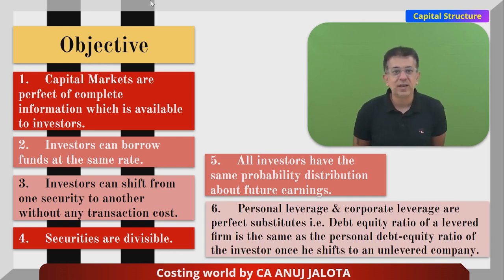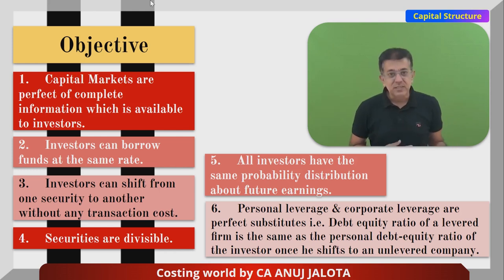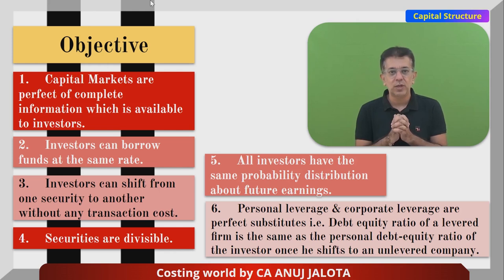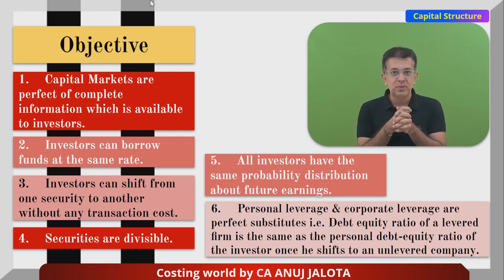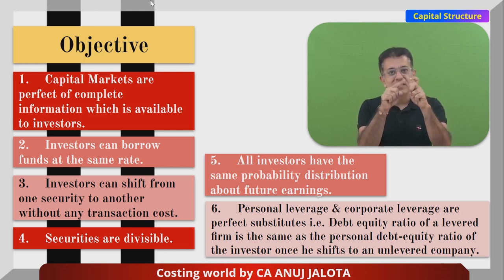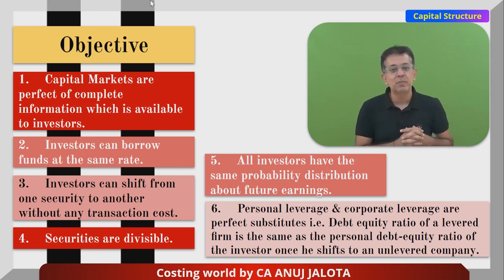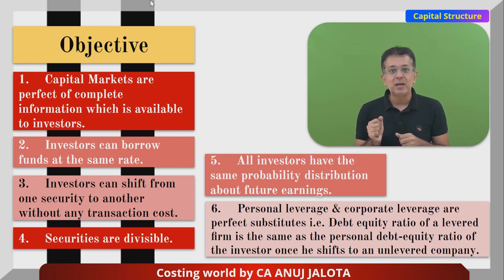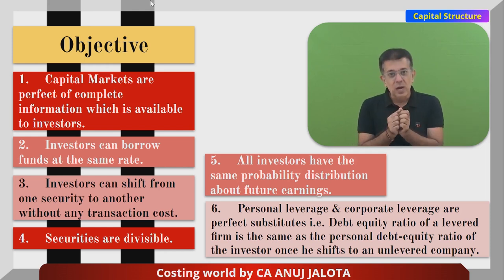Assumption number six is slightly complicated: personal leverage and corporate leverage are perfect substitutes. That is, the debt-equity ratio of the levered firm is the same as the personal debt-equity ratio of the investor once he shifts to the unlevered company. Risk here is measured by the debt-equity ratio — higher debt means higher risk. If I sell shares of a levered company and shift to an unlevered company which has no debt at all, that unlevered company has no risk.